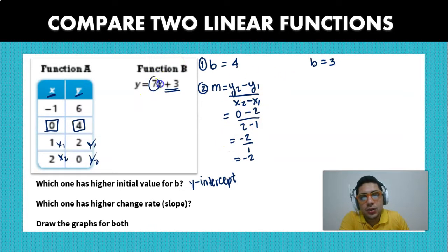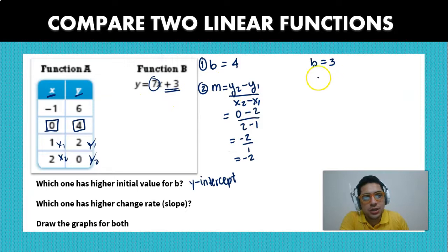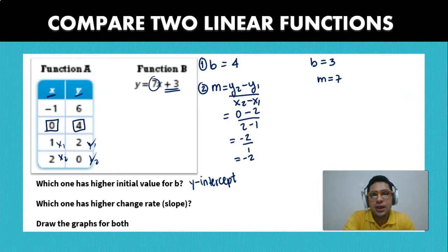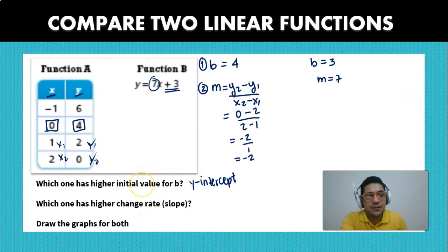And on the second one we're already given the slope which is 7. Because we can see directly from the function or the equation, right? So that means that on the second one, 7 is going to be higher than minus 2. And on the first one, 4 is going to be higher than 3. So now they're asking us to write the functions or to draw the graphs, right? So it's actually pretty easy.